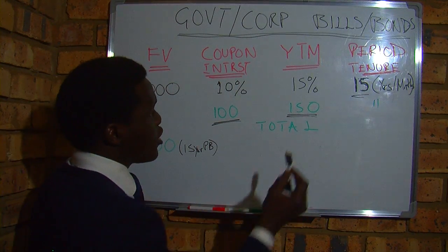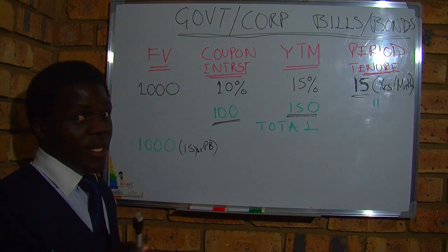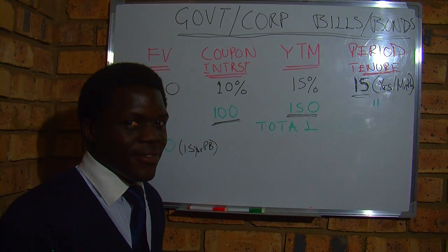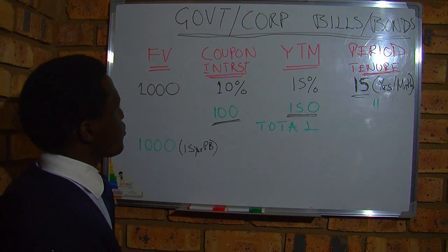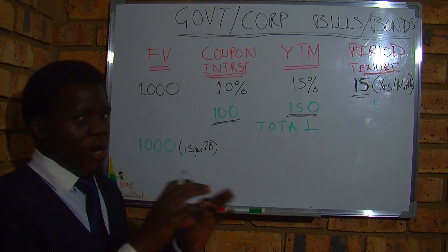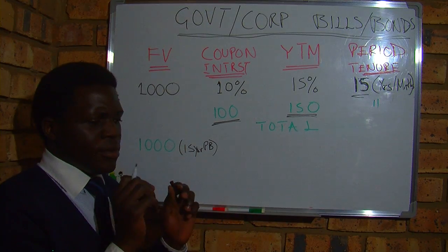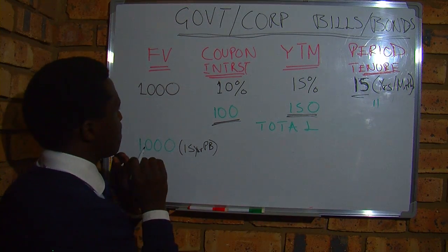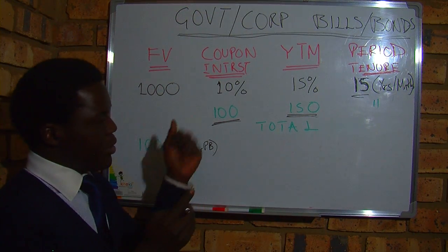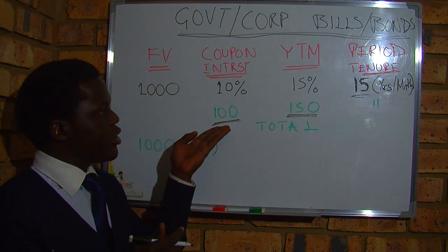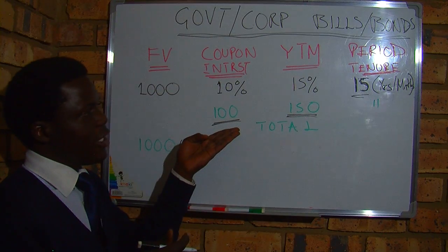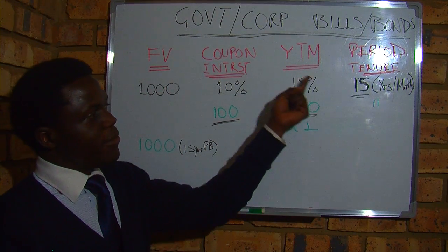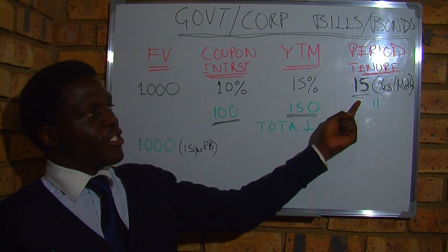After the 15 years, you're going to get your initial investment — that one thousand you lent to the government — back, because it's a loan and they're going to pay you back. So let's put some numbers in here. The face value or price of this debt is one thousand. The interest is 10 percent, so that's one hundred. The yield to maturity is 15 percent, which you receive after the 15 years.